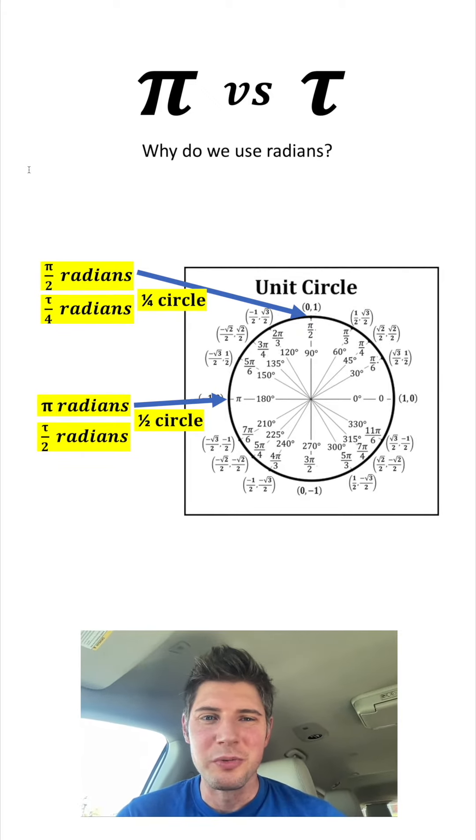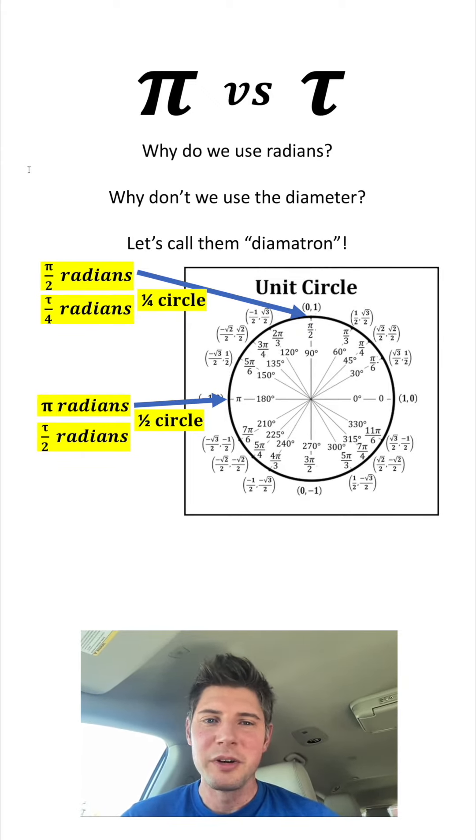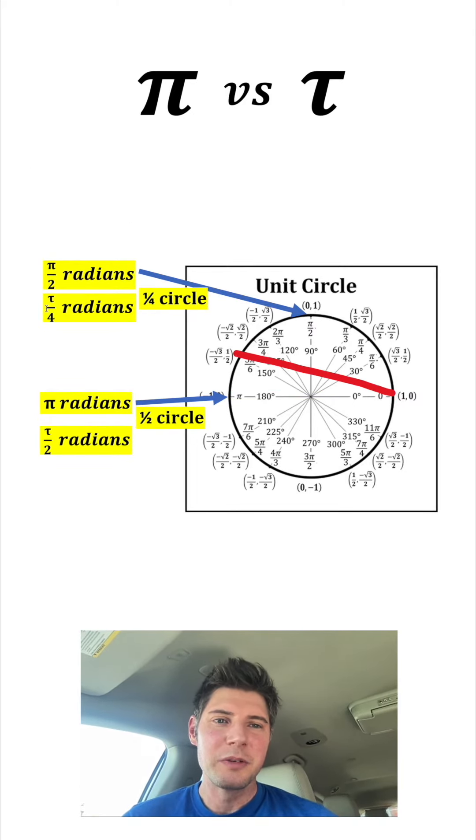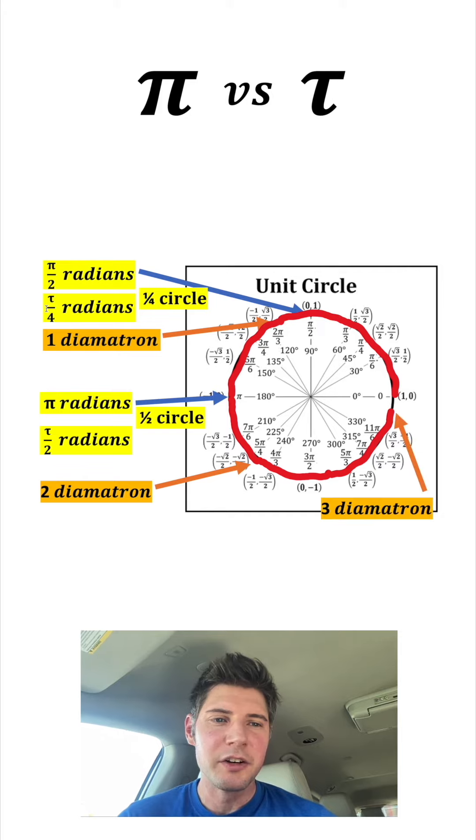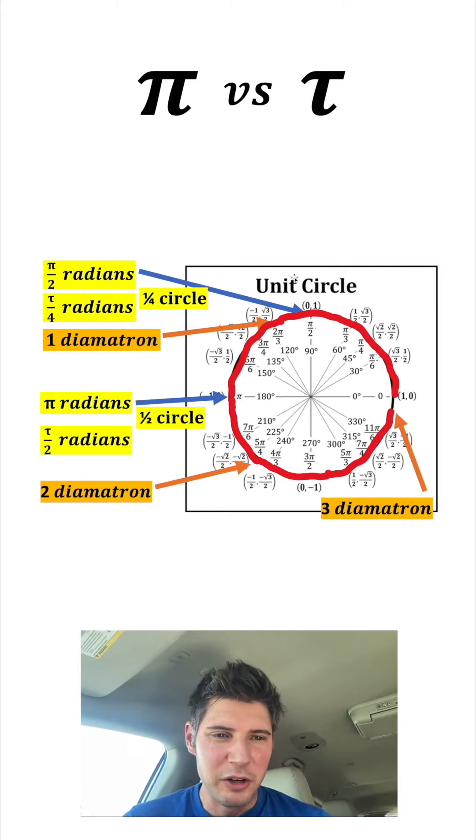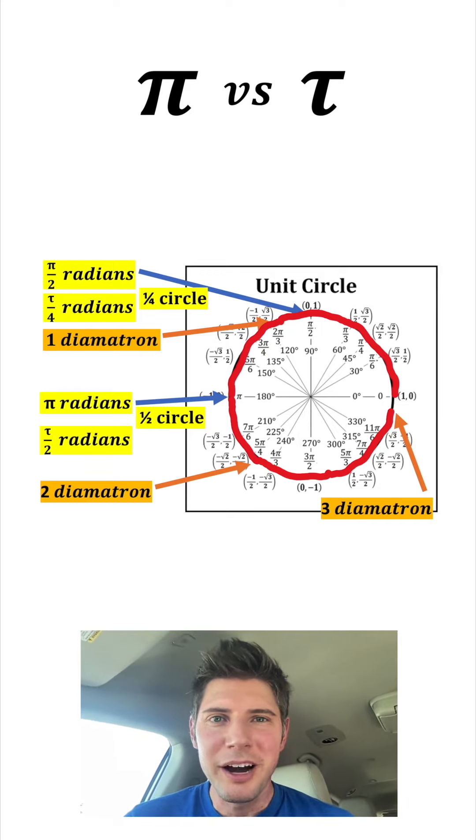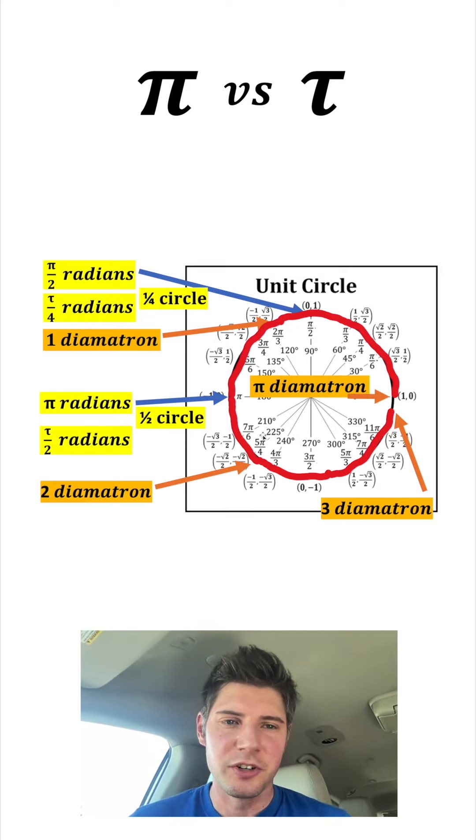So I have one more question. Why do we even use radians? Why don't we use the diameter? And we can call them something like diametron. I'll show you what I mean. If we take the diameter, we spin it around the circle. So this right here would be one diametron. And then we do it again. This right here would be two diametron. And this right here would be three diametron. And you can see if we go a little bit further, it'd be 3.14 diametron. So that would mean that pi diametron is the entire circle. And now we have one pi correlates with one circle.